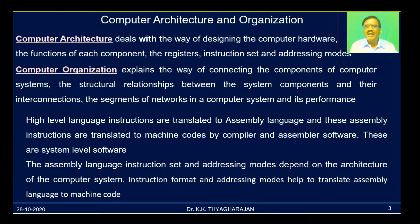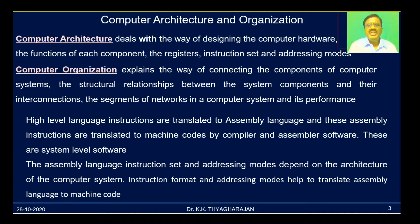In any computer system, high-level language instructions are translated to assembly language, and these assembly instructions are translated to machine code by compiler and assembler software. The compiler translates high-level language to machine code; the assembler translates assembly language to machine code. These software — compiler and assembler — are called system-level software. The assembly language instruction set and addressing modes depend on the architecture of the computer system, and help to translate assembly language to machine language. Now with this background, let us try to answer some multiple choice questions.